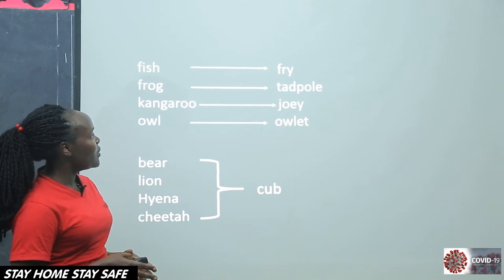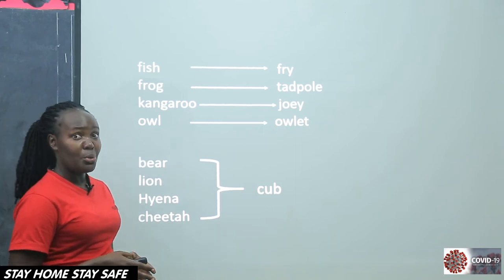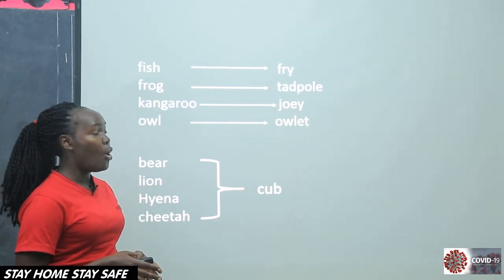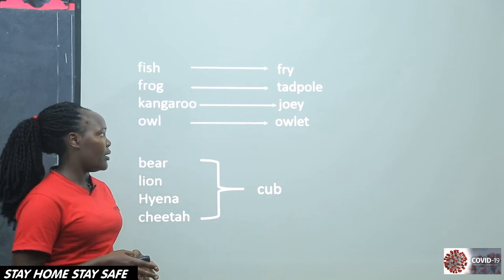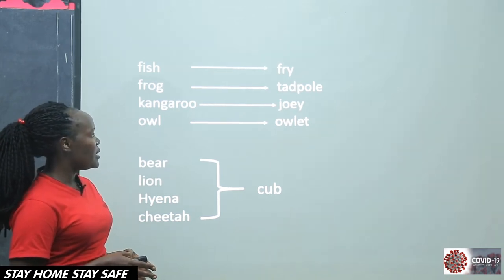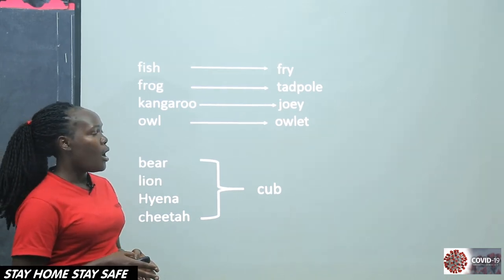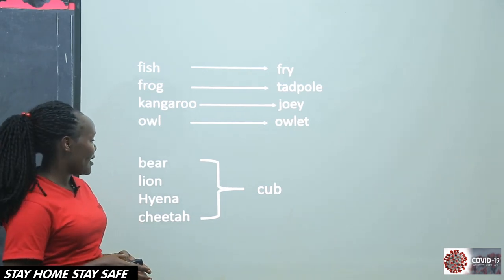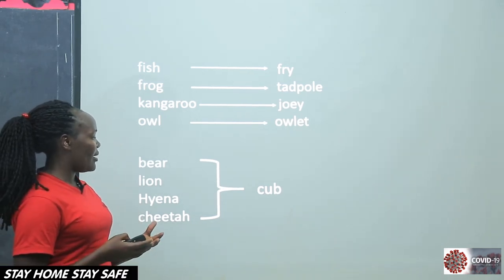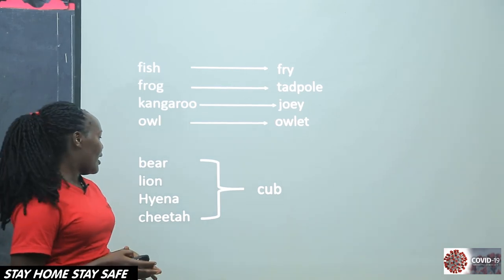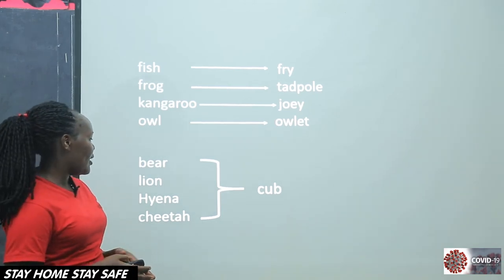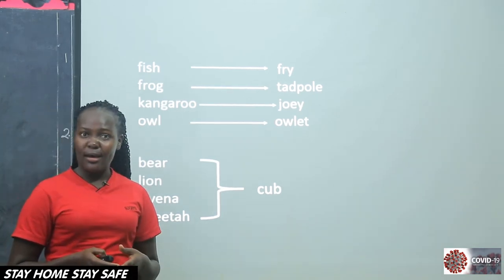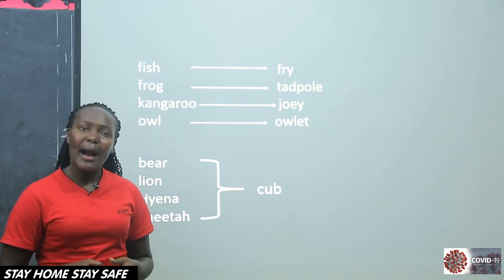When it comes to a kangaroo, it has a joey. Check on the spelling — it is J-O-E-Y. When it comes to the owl, it has the owlet. When it comes to the bear, lion, hyena, and cheetah, they also share — they have a cub.